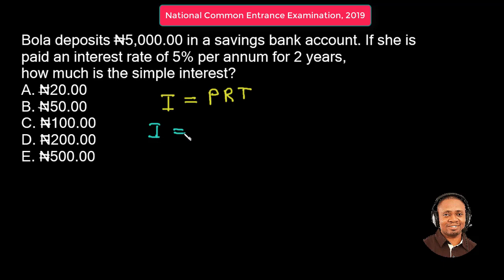So I is equal to P — the principal. The principal amount is the money deposited, which is 5,000 Naira.